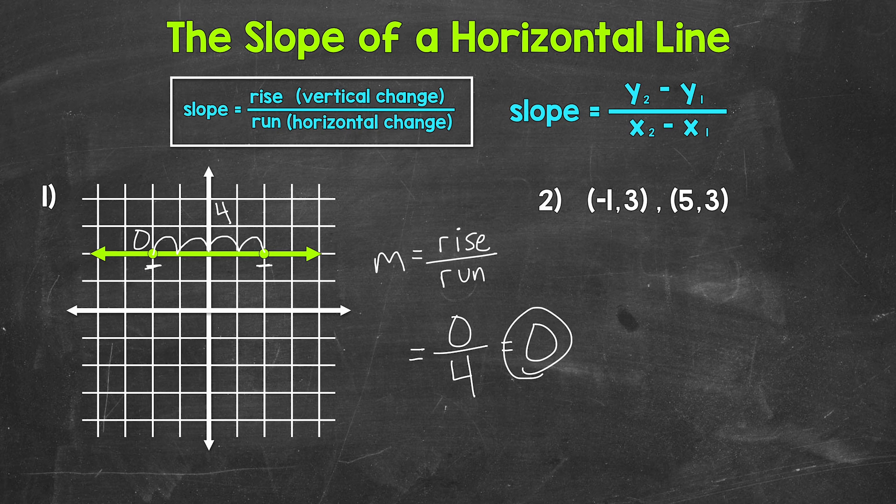Let's move on to number two, where we are going to find the slope of the line from two points on the line. So we just have the coordinates, no graph here. Remember, we use the formula slope equals y2 minus y1 over x2 minus x1. Y2 minus y1 gives us the rise, and x2 minus x1 gives us the run.